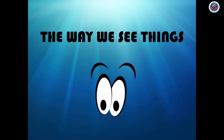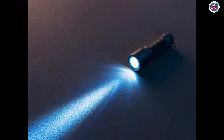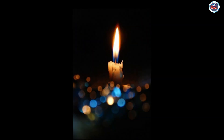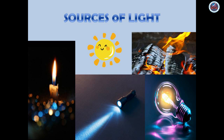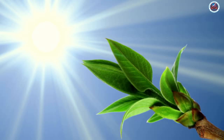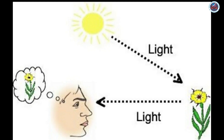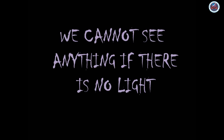The Way We See Things. Light comes from a source. For example, when we switch on a torch or light a candle, the beam of light comes out from the bulb or the candle. So the bulb, the candle, or the fire is a source of light. The sun is the main source of light. The light travels from the source to the object, bounces back or reflects off the object into our eyes. This is how we see things. We cannot see anything if there is no light.